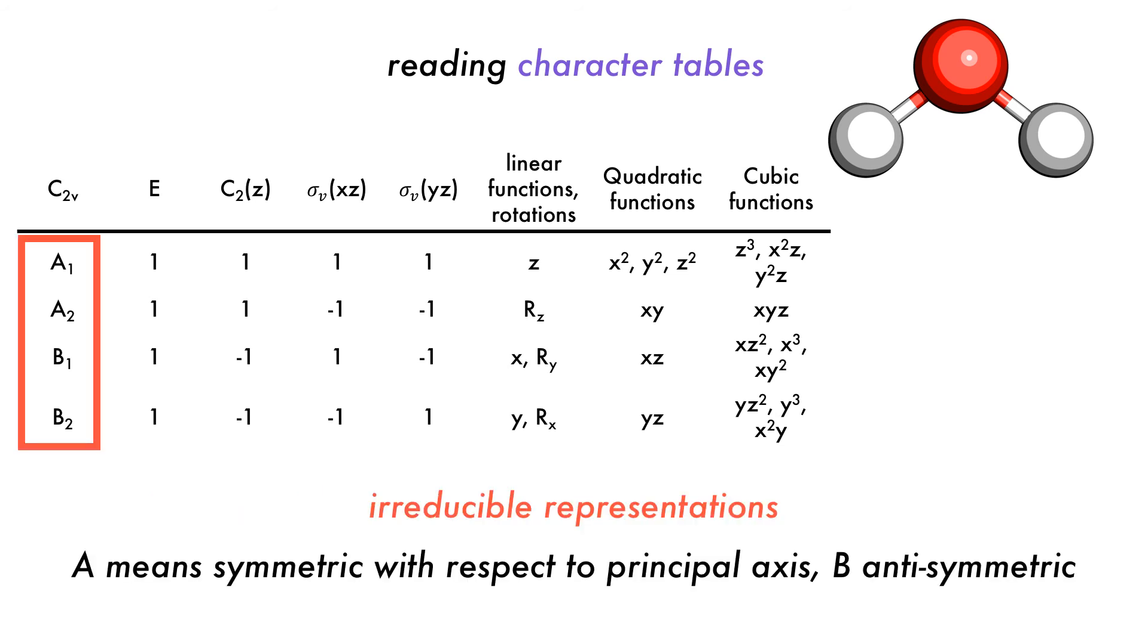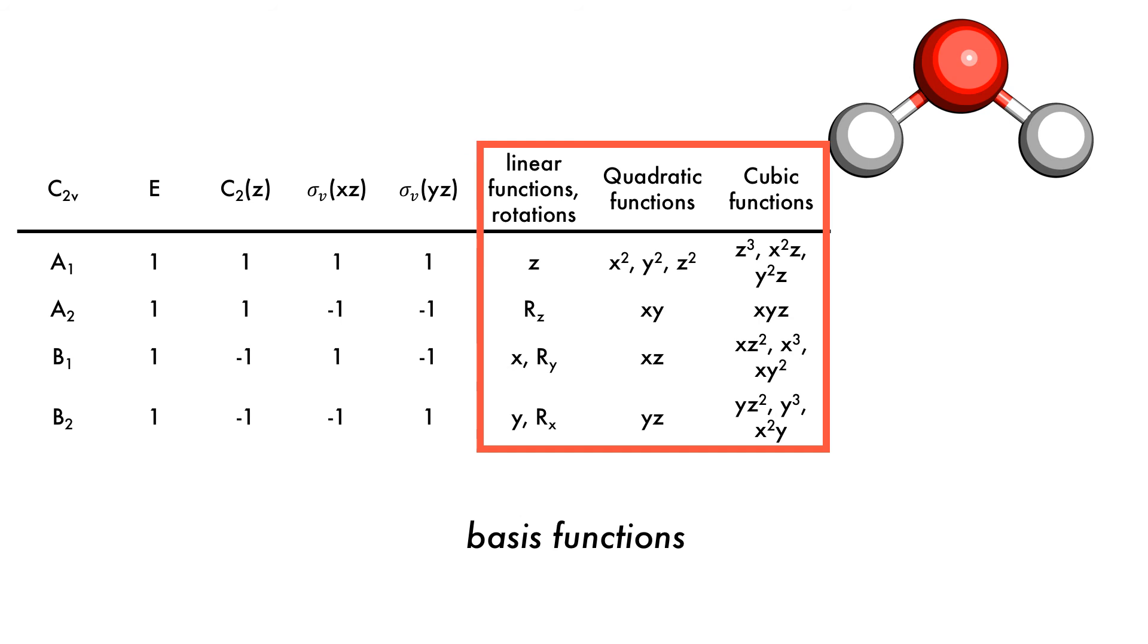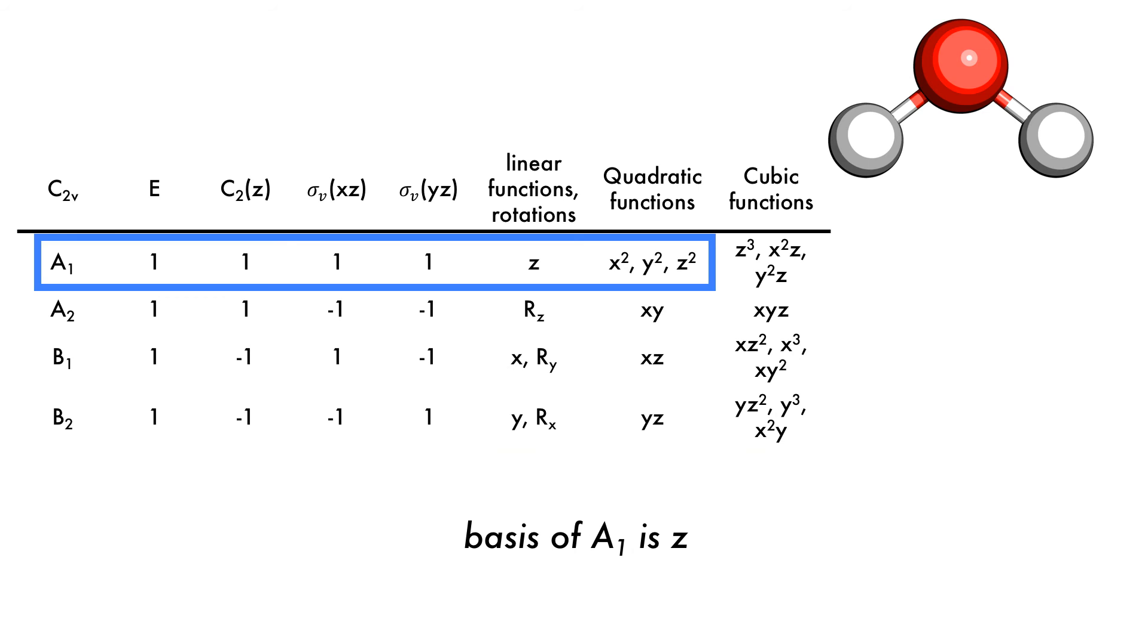Looking at the first column, we have what are called the irreducible representations, which cannot be reduced further. To the right of this, we have the representations. A value of one means that the object is symmetric with respect to itself, and a value of minus one means that it is anti-symmetric. The letters on the right side of the table are called basis functions. They represent mathematical functions such as orbitals and rotations. For the A1 irreducible representation, it is said that Z forms its basis. The same is true for the quadratic functions such as X squared.